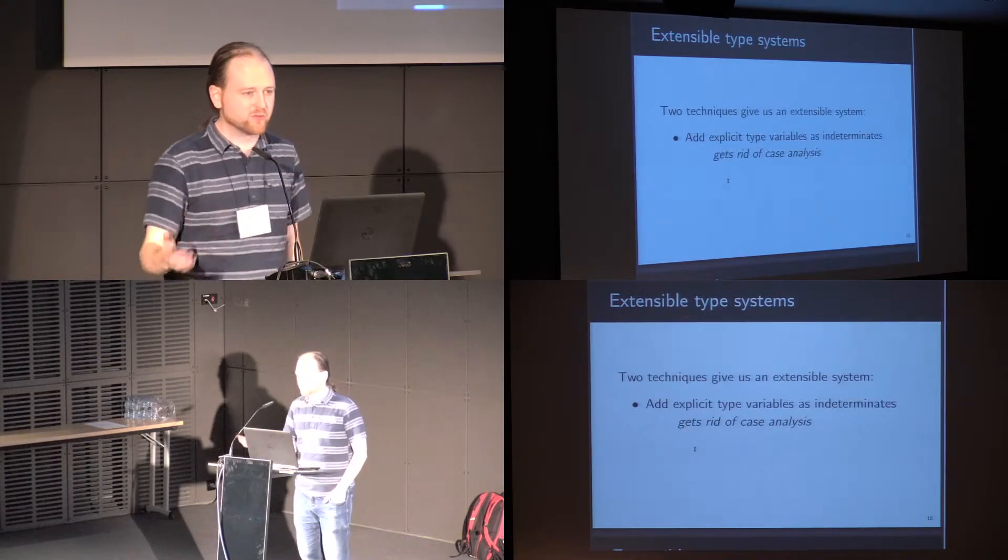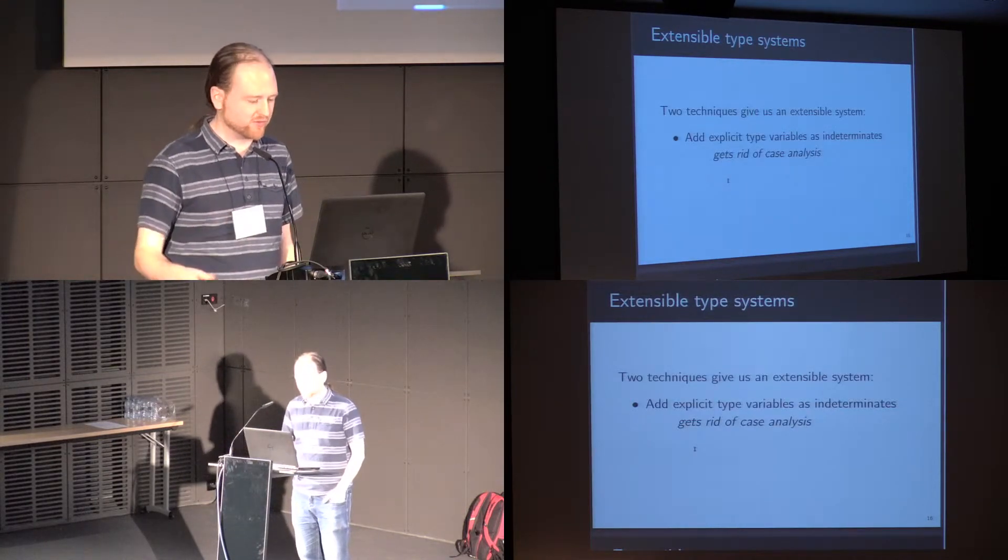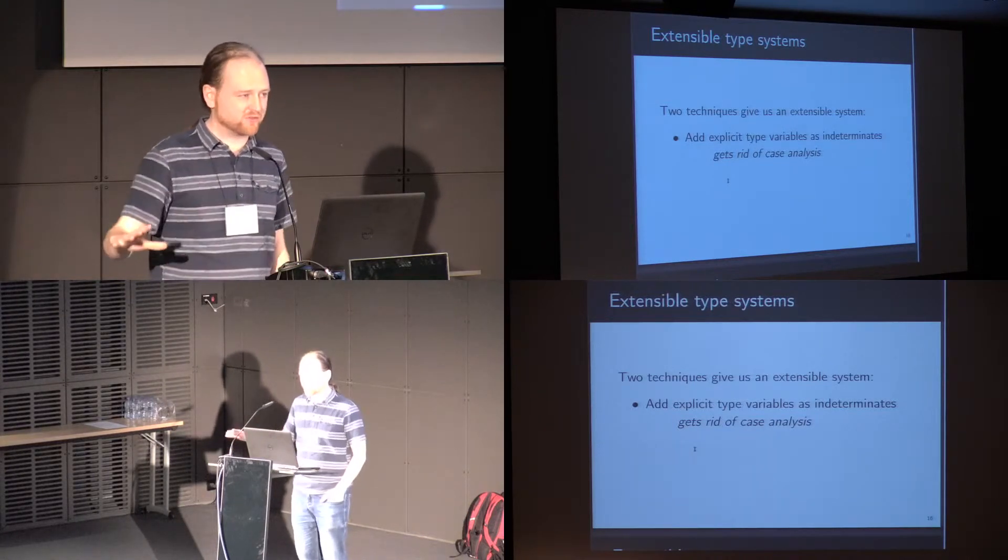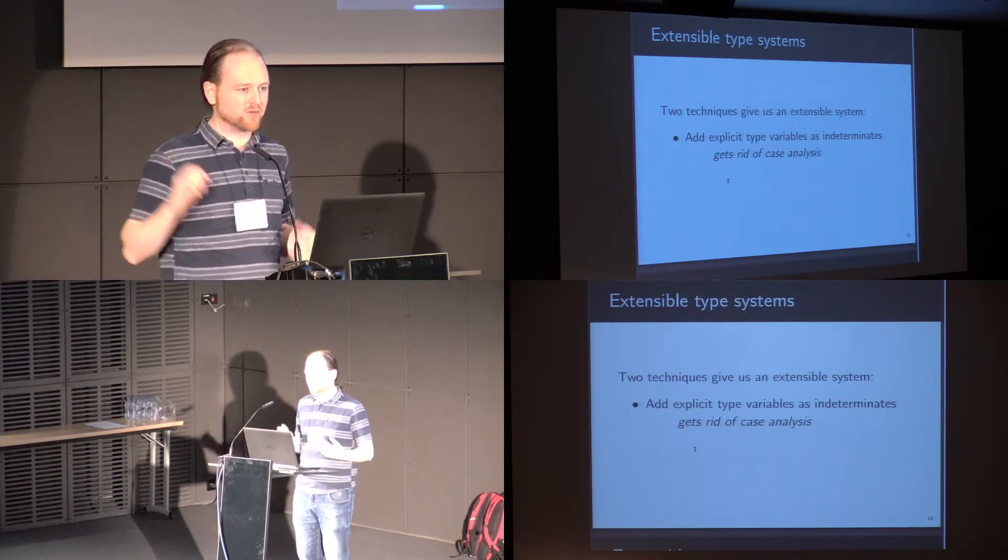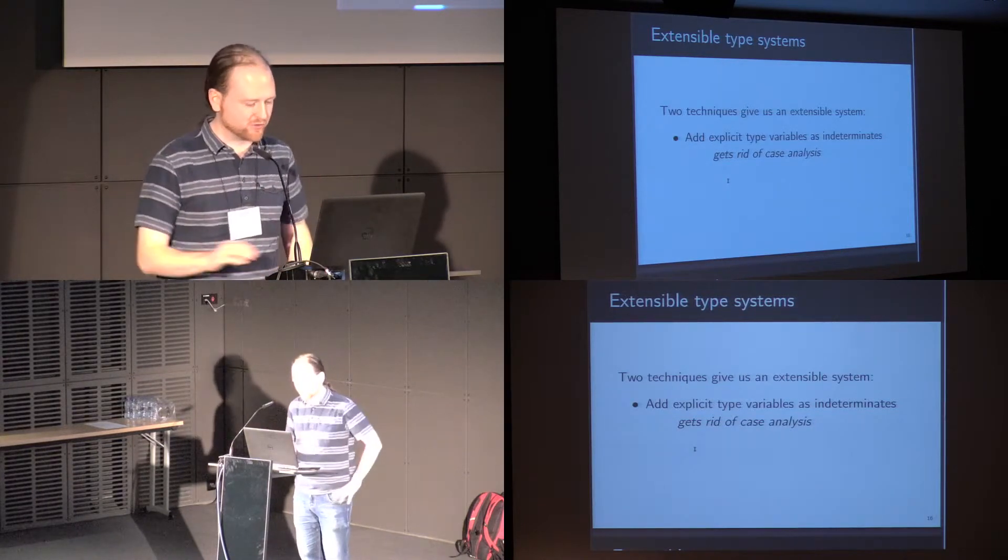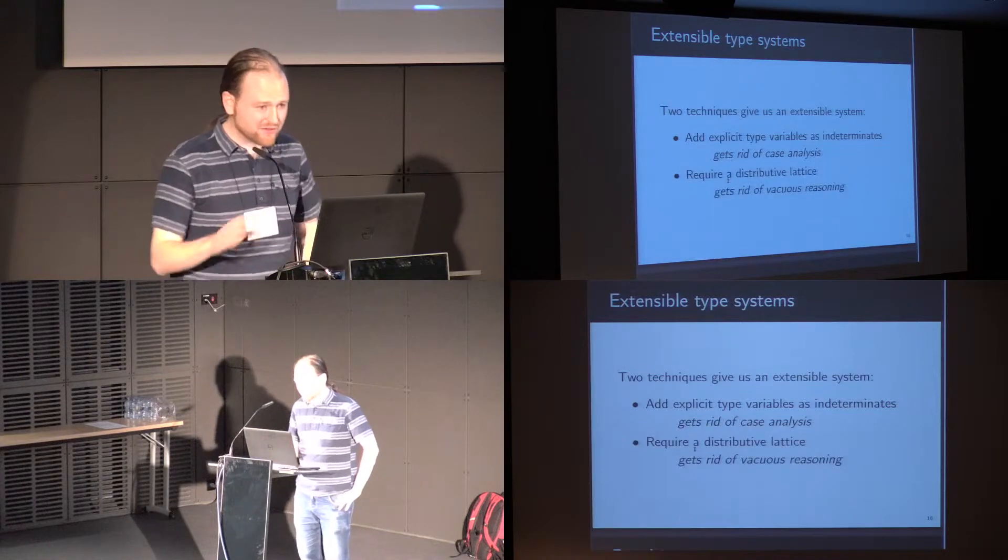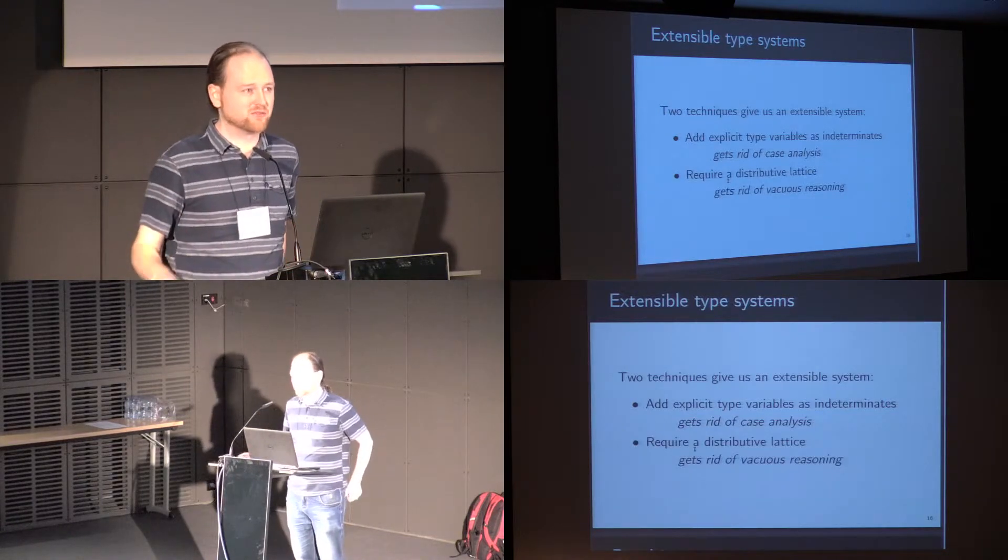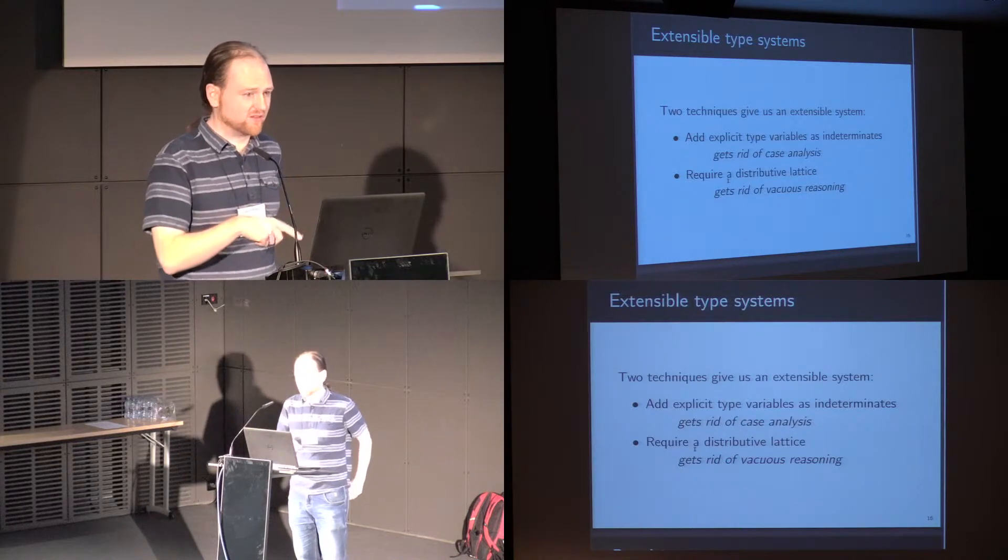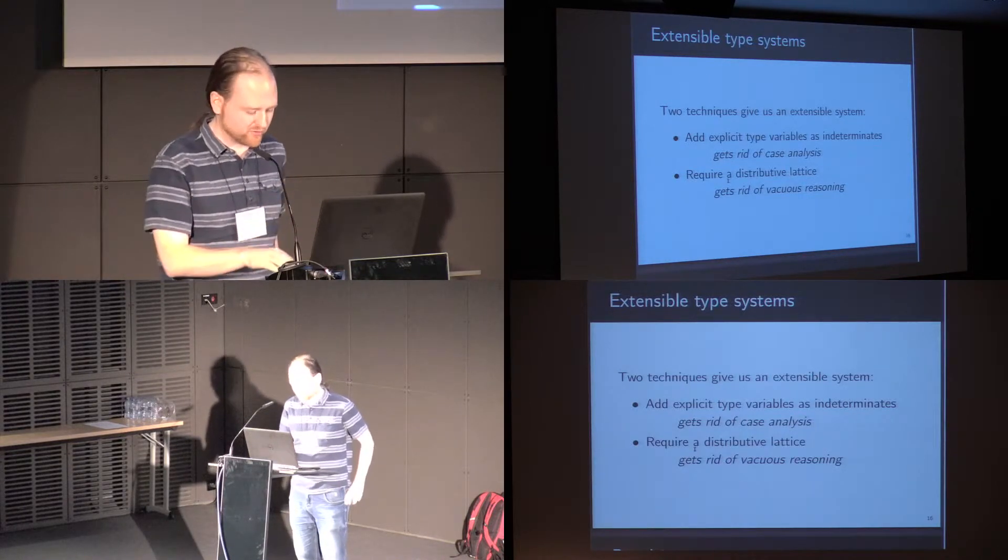So there's two principles I want to use to build an extensible type system. The first one is we treat type variables as indeterminates. We don't find the ground types first and quantify over them. We genuinely add type variables to the subtyping order as opaque things that live on their own. And the second thing is that we build a distributive lattice rather than just plain lattice, which prevents cases of that sort of vacuous reasoning that we saw on the previous slide.